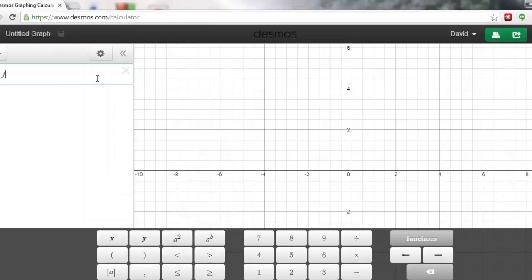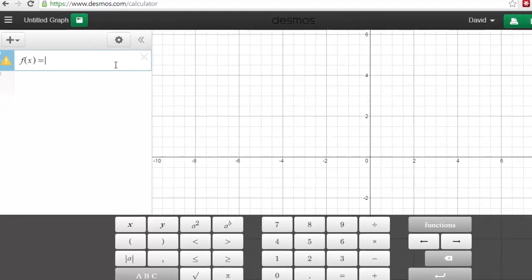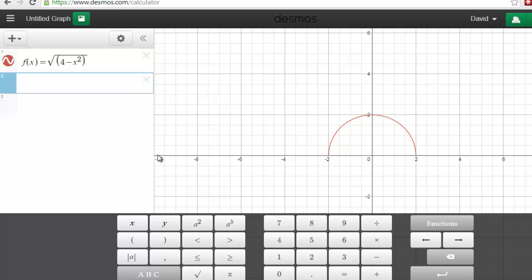So first let's make a function. Let's use, let's do something we know. Let's do square root of 4 minus x squared maybe. Alright so there's our curve. And I want to find the area under the curve.